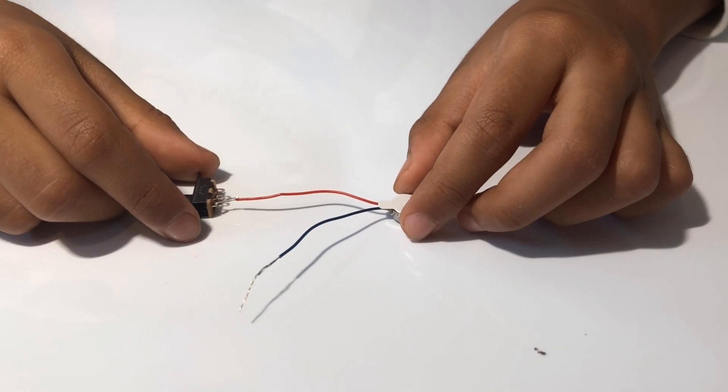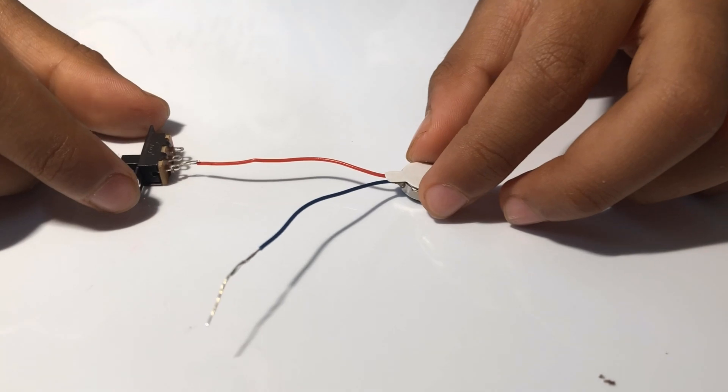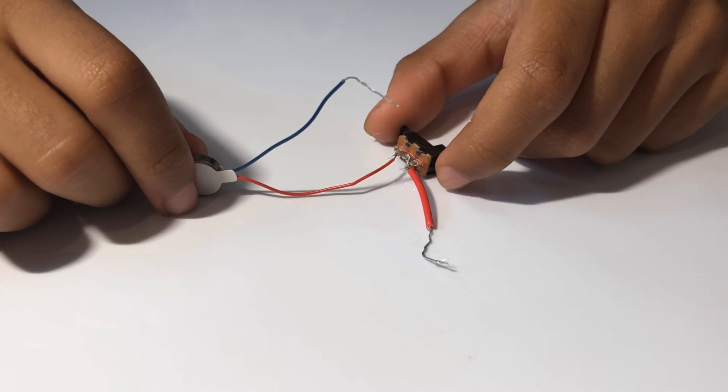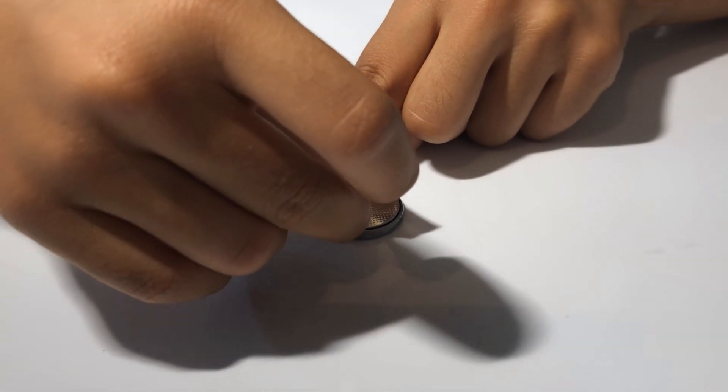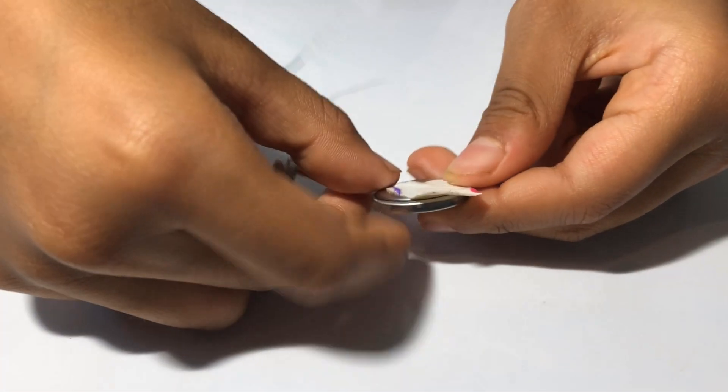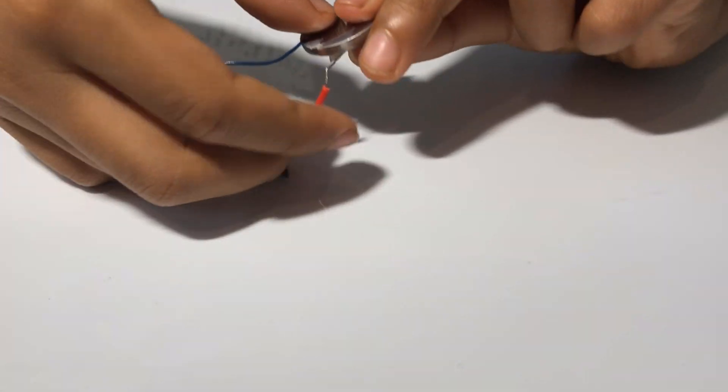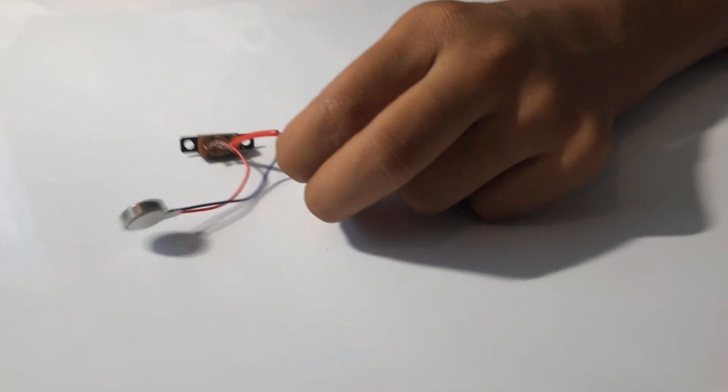Put one of the wire ends inside the hole of the toggle switch. Put the second wire in the other hole. Then stick the wire to the battery. Then do it to the other side. This completes your loop.